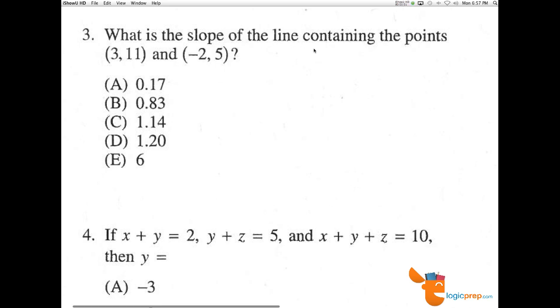Number three, what is the slope of the line containing the points (3,11) and (-2,5)? We know that M slope equals Y2 minus Y1 over X2 minus X1. Rise over run.